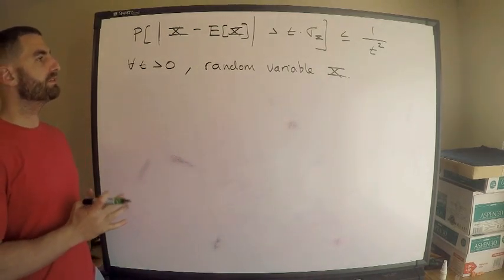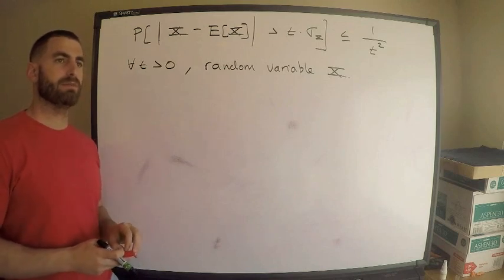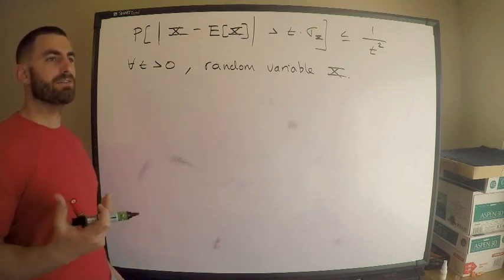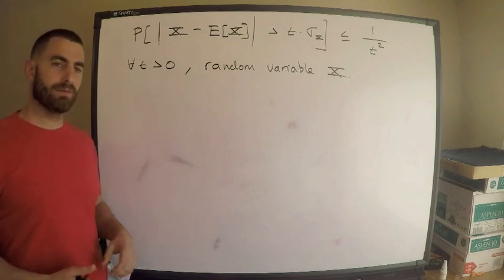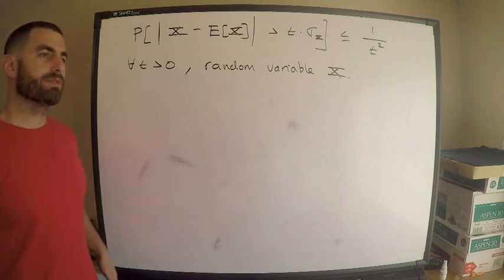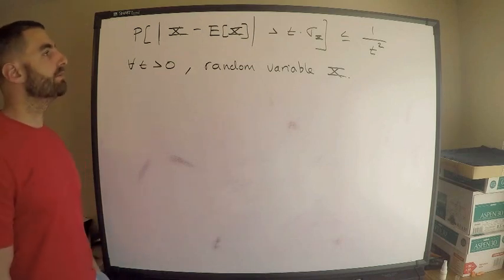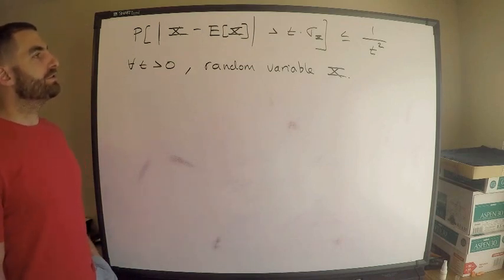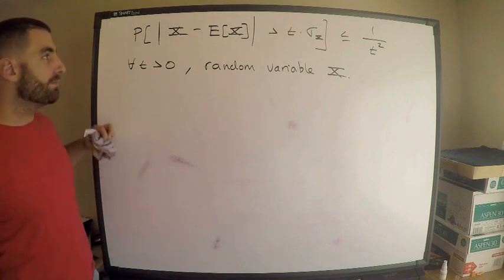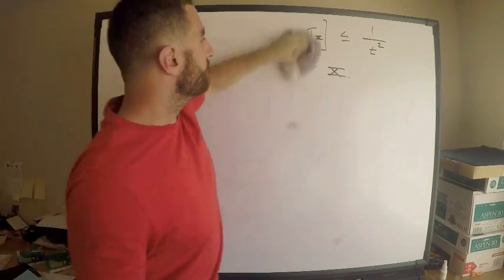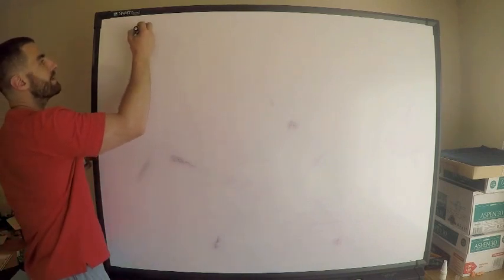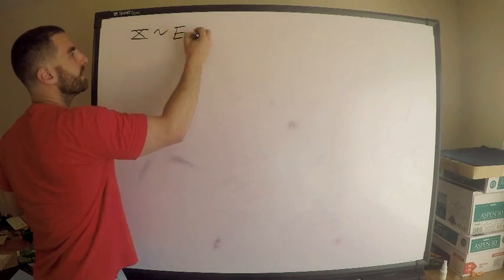I want to do an example of this. The question is a modified version of a question from the Actex manual — I modified it slightly due to copyright. The question wants me to find an upper bound on a specific quantity using Chebyshev's inequality. They give me that x is distributed exponentially.